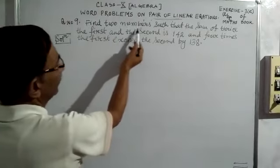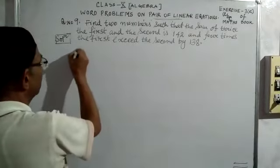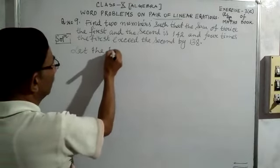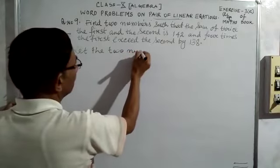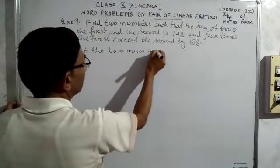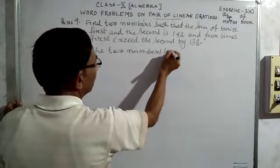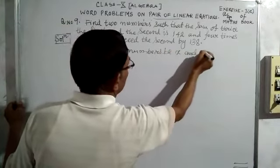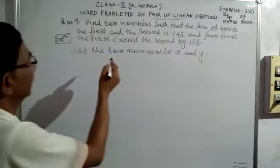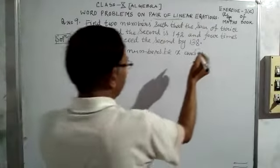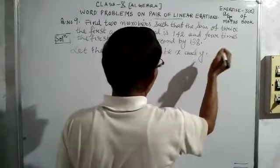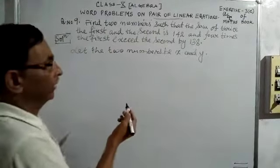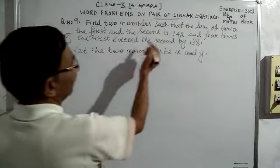In the beginning it is written 'find two numbers', so we can write here: let the two numbers be x and y.